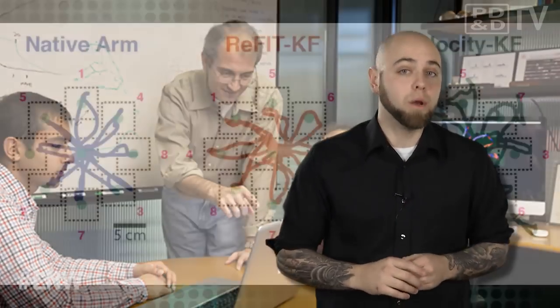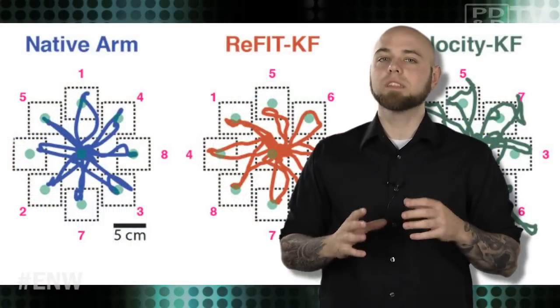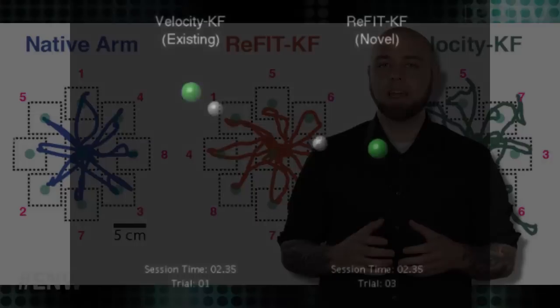Stanford University researchers have now developed an algorithm known as ReFit that vastly improves the speed and accuracy of neural prosthetics that control computer cursors. The system relies on a silicon chip implanted in the brain, which records action potentials in neural activity from an array of electrode sensors, and then sends that data to a computer. The ReFit algorithm is able to make adjustments on the fly while guiding the cursor to a target, just as a hand and eye would work in tandem to move a mouse cursor onto an icon on your computer desktop.